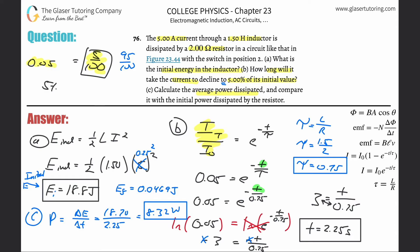For the initial power, instead of using the energy formula, we use P = I²R. With an initial current of 5 amps and a resistance of 2 ohms: P = 5² × 2 = 25 × 2 = 50 watts. So the initial power is 50 watts.